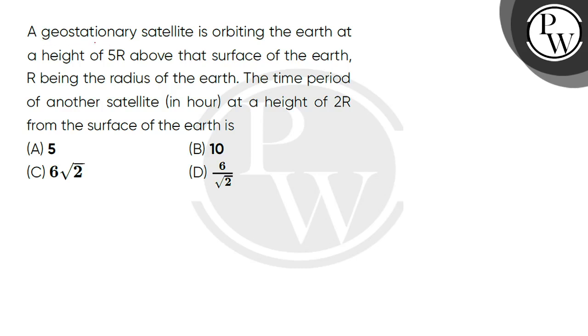Now let's read the question. A geostationary satellite is orbiting the earth at a height of 5R above the surface of the earth, R being the radius of the earth. The time period of another satellite in hours at a height of 2R from the surface of the earth is?